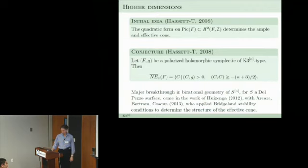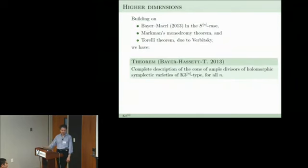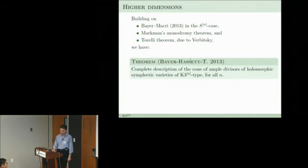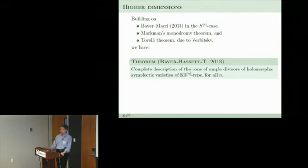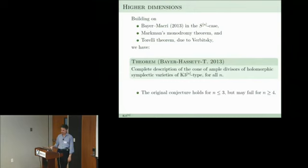The new ingredient was derived category stability conditions, building on breakthrough work by Bayer-Macrì for Hilbert schemes Hilb^n(K3), and also building on Markman's monodromy results and the Torelli theorem. This led to a theorem — joint work with Bayer, Brendan, and myself — giving a complete description of the cone of ample divisors and all the other cones on holomorphic symplectic varieties of K3^[n]-type for all n. What we learned is that the original conjecture holds for n=2 and n=3 but may fail for n greater than or equal to 4.